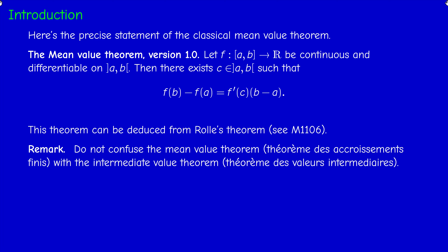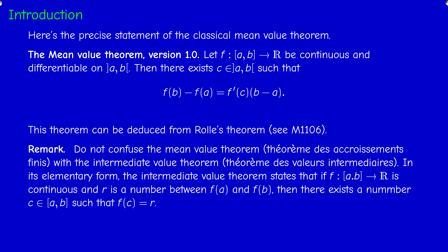Don't confuse the Mean Value Theorem — known in French as 'théorème des accroissements finis' — with the Intermediate Value Theorem ('théorème de la valeur intermédiaire'). The Intermediate Value Theorem states that if f is continuous on [a, b] and r is a number between f(a) and f(b), then there exists c in (a, b) such that f(c) = r. In other words, a continuous function on an interval takes any value between the images of the endpoints. They are totally different: the IVT is a topological theorem on connectedness and continuity, whereas the MVT is a theorem of calculus or analysis.